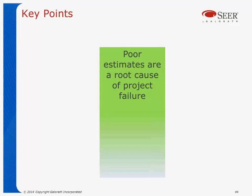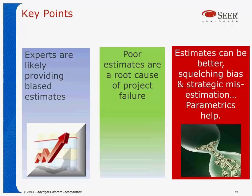In summary, the three key points: estimators are likely providing biased results — your experts are probably giving you biased results, and they don't even mean to usually; they're doing the best they can, but it's hardwired into us. Poor estimates cause failures in projects — they are a root cause of project failures. And estimates can be better: by squelching bias and strategic misestimation, if you recognize these issues and try to use reference class forecasting and parametric models like SEER, estimates can help.